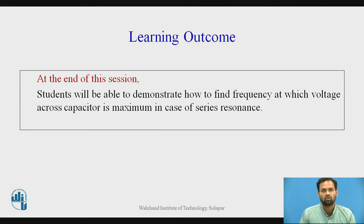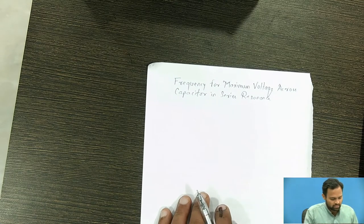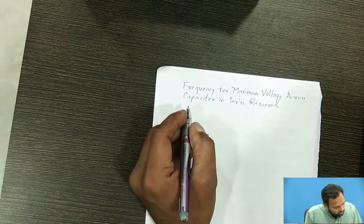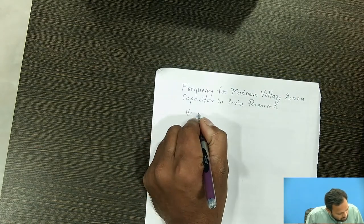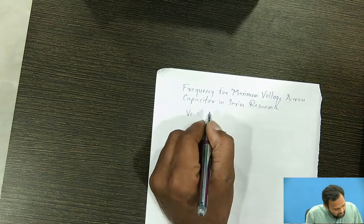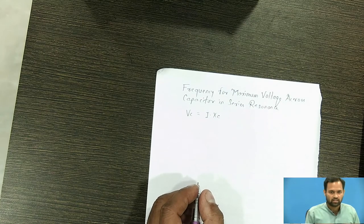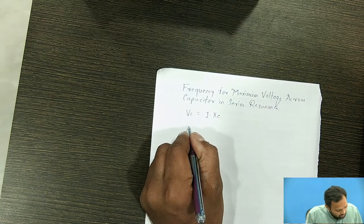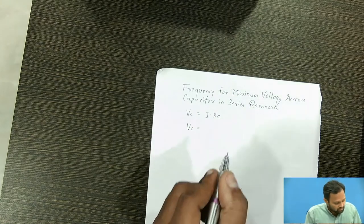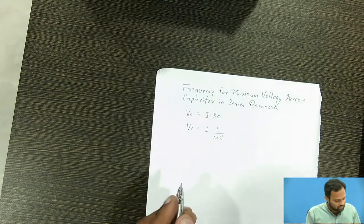While finding frequency for maximum voltage across capacitor, we should first write down the equation for Vc, voltage across capacitor. Voltage is represented by current multiplied by capacitive reactance, and capacitive reactance is represented by 1 upon omega into C. Current is represented by voltage upon impedance.